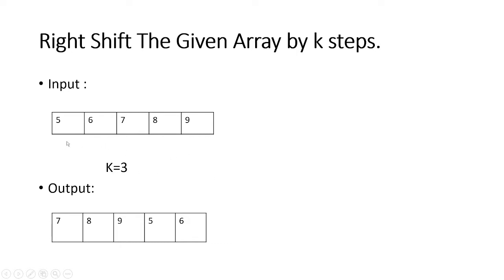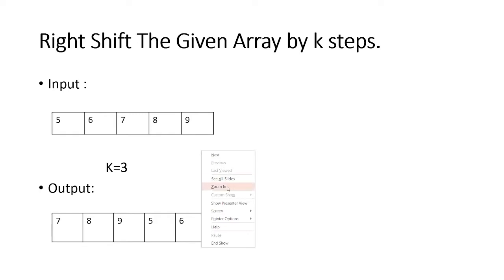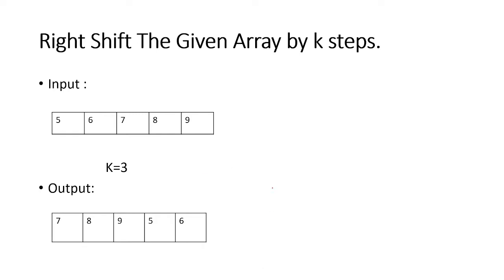We are going to see a very straightforward solution where we are just shifting each and every element to the right, and the last element we will be replacing with the 0th element. So here this is at 0th position, this is the 1st position, 2nd, 3rd and 4th.